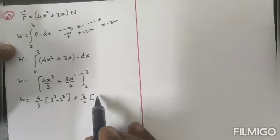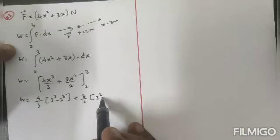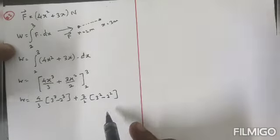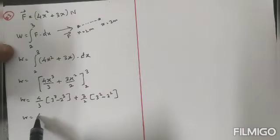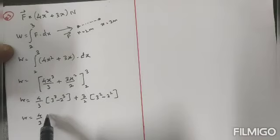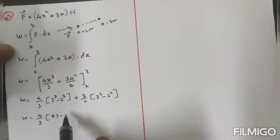3/2 let's take outside, then for x² apply the upper limit, that is 3² - 2². So therefore work done is equal to 4/3,